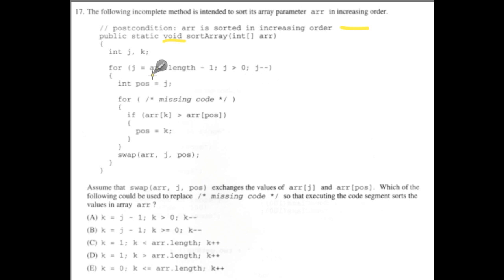Okay, so here J is starting at array dot length minus one. So it's the last position in the array going down until J is one and never reaches zero. And so it decrements.